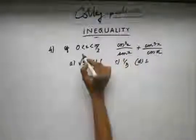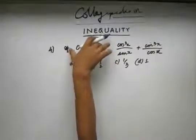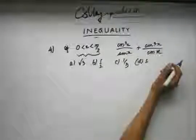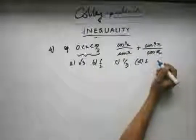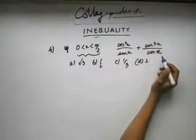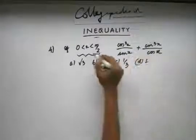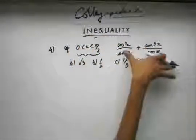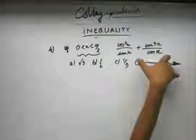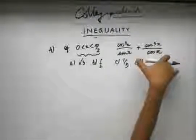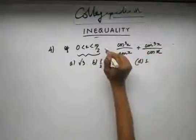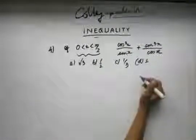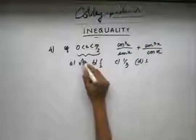Why has this particular range been given? This range is important because the person who framed the question is very aware that it should be solved using AM-GM inequality, and in AM-GM the numbers must be positive. In the range 0 to π/2, both sine and cosine are positive, so they have given this range. Without this range, the minimum value could be a negative number.